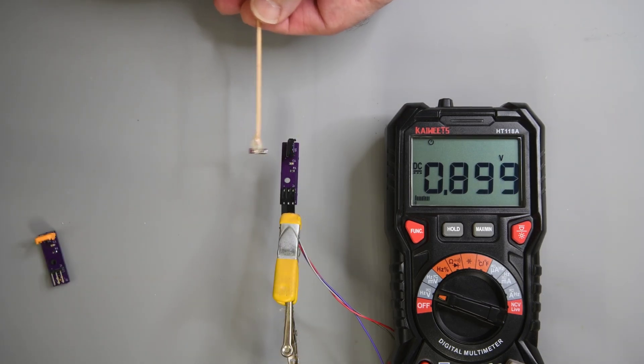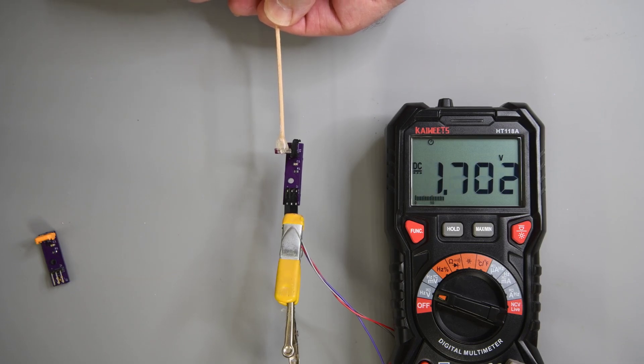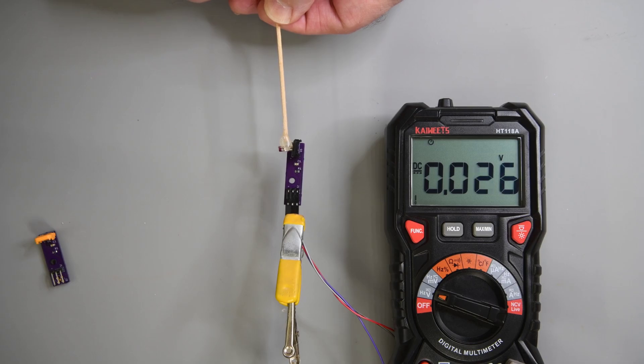This is how the magnet is oriented in the GuliKit TMR joysticks. Well I think I might have the poles swapped compared to the actual joystick. But you can see that by moving the pole of the magnet from one side of the sensor to the other, it will output the full range of the sensor.